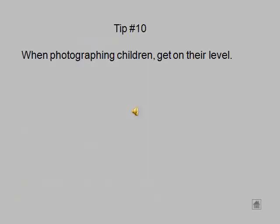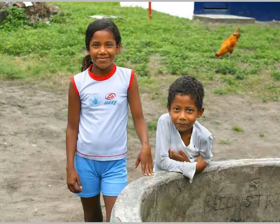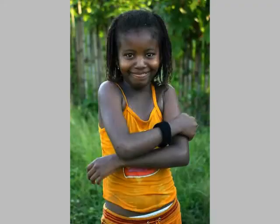And tip number ten: when photographing children, get on their level. Here's a photo of two children beside a well. It's cute, but I took the picture above them — they're looking up. This picture is much better. It's taken at the eye level of the subject.